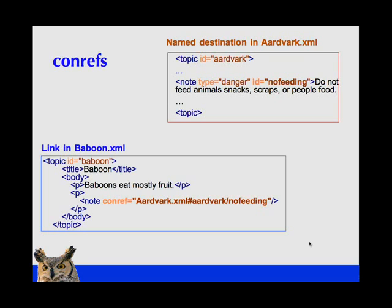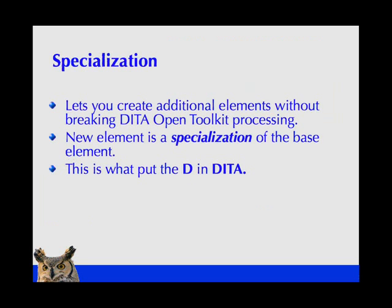Conrefs allow you to reference chunks of another document. They are similar to FrameMaker text insets. Conrefs are typically used to reference paragraphs or even subparagraphs. If you want to reference topics, you would typically do that in the map file and not in conrefs, although it could be done that way as well. You can set up multiple map files and point to the same topics over and over again to reuse topics. Conrefs allow you to reference paragraph-level or smaller content.